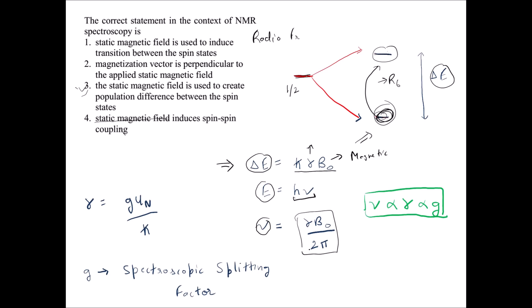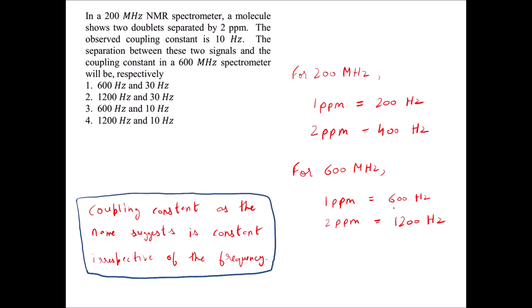The radio frequency is equal to γB₀ divided by 2π — a very important formula. The gyromagnetic ratio is also equal to g·μₙ / ℏ, where g is the spectroscopic splitting factor. Note that g is not the gyromagnetic ratio — γ is. The g-factor is commonly called the g-factor, but it is actually the spectroscopic splitting factor. With B₀ and 2π constant, frequency is proportional to γ, which is proportional to g.